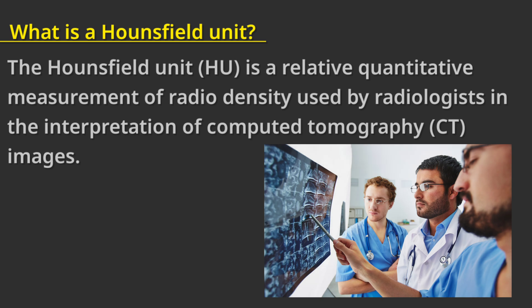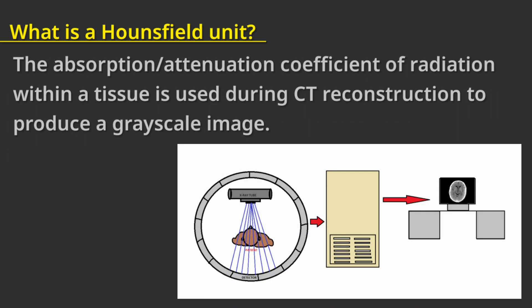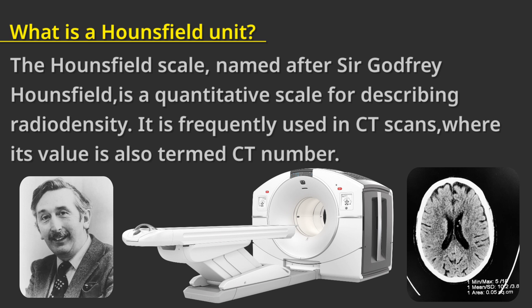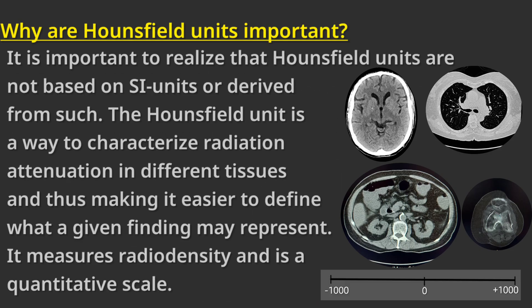What is a Hounsfield unit? The Hounsfield unit (HU) is a relative quantitative measurement of radio density used by radiologists in the interpretation of computed tomography images. The absorption attenuation coefficient of radiation within a tissue is used during CT reconstruction to produce a grayscale image. The Hounsfield scale, named after Sir Godfrey Hounsfield, is a quantitative scale for describing radio density, and its value is also termed the CT number.